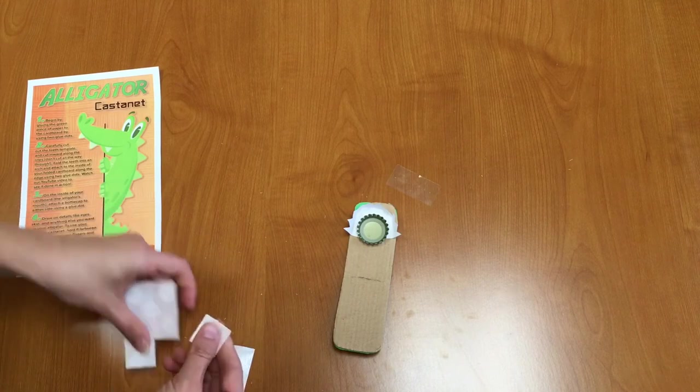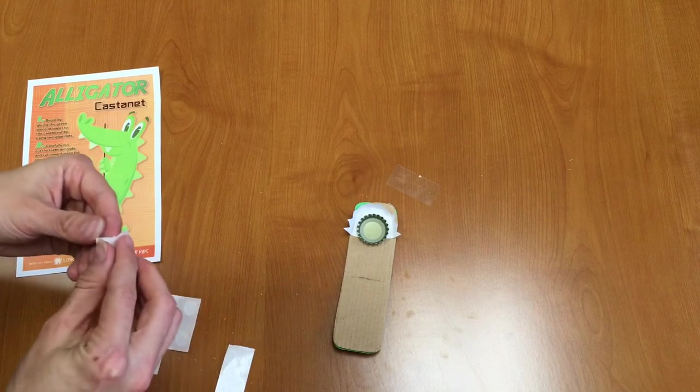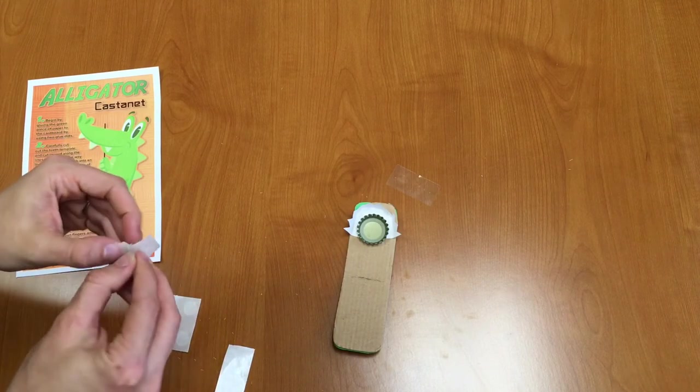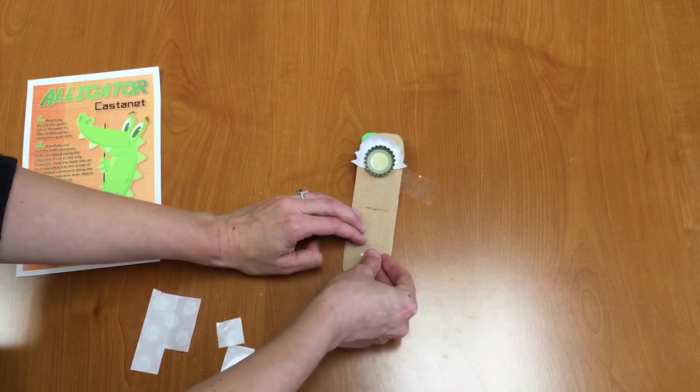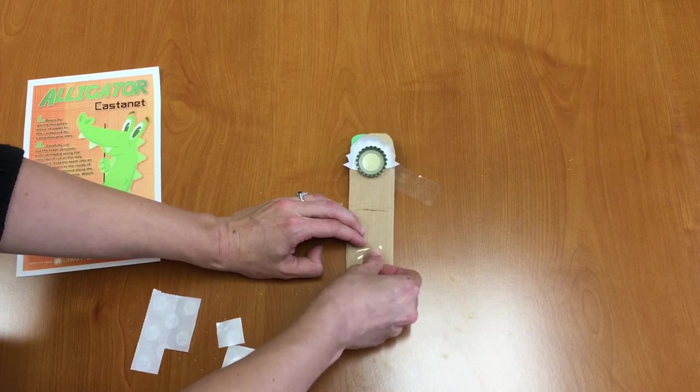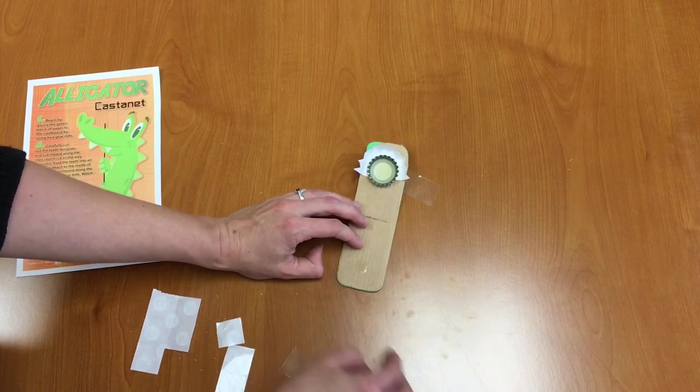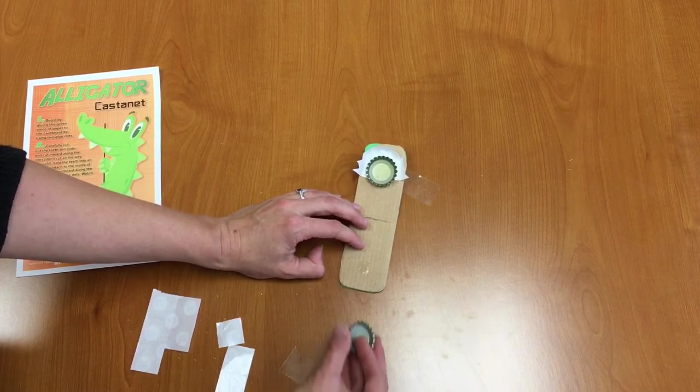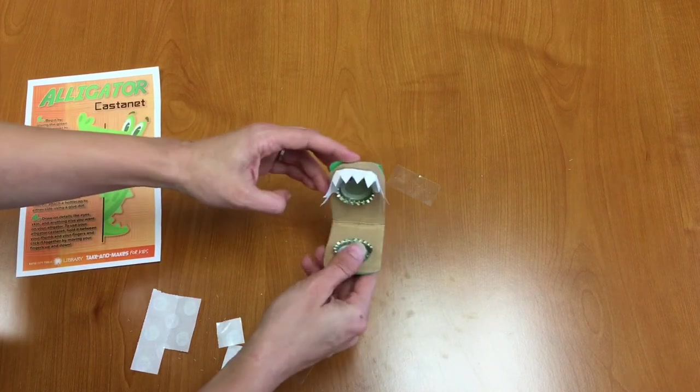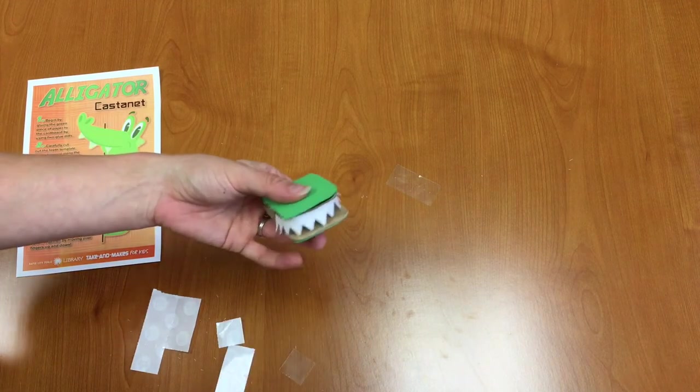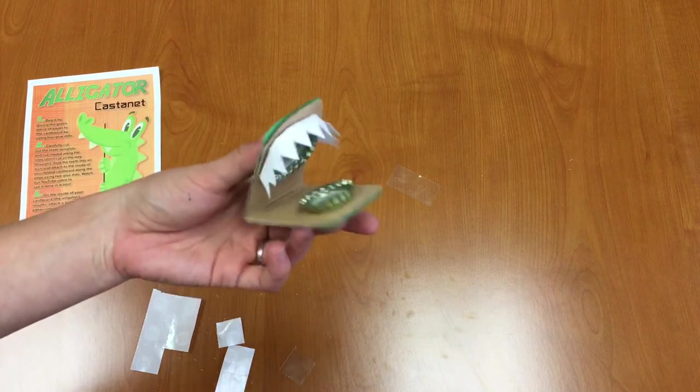Now we need to take one more glue dot. And we're going to do the same thing on the bottom side. So we'll put it kind of towards the tip but not too far towards the tip because you want them to line up. And then we'll place our bottle cap there. And now we have a castanet.